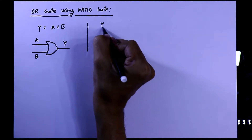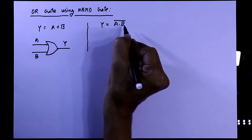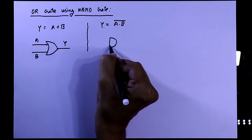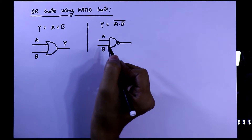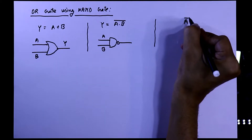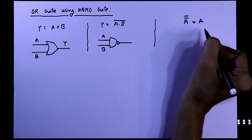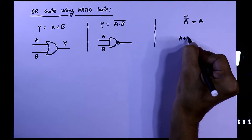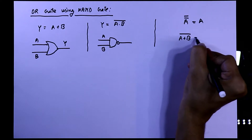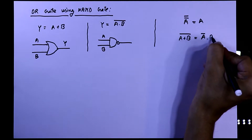The mathematical expression of NAND gate is ā·b̄, and this is the symbol of a two input NAND gate. According to Boolean expression, ā̄ = a, and (a + b)̄ = ā·b̄.